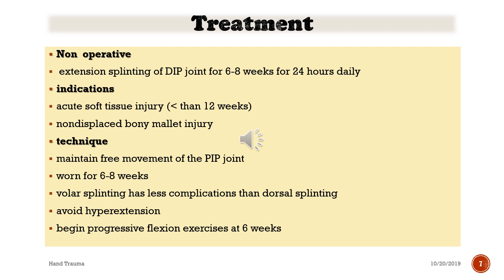Non-operative treatment consists of extension splinting of the DIP joint for six to eight weeks, applied 24 hours daily. The indications are acute soft tissue injury or a non-displaced bony mallet injury.